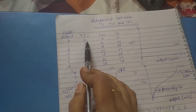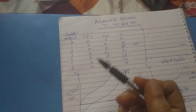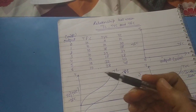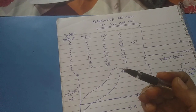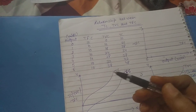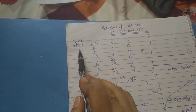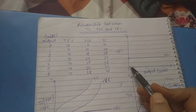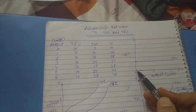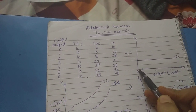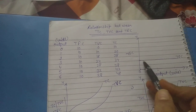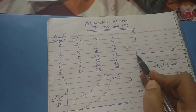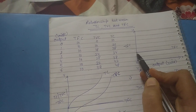Why? The reason — suppose we are hiring a building for production. Before starting the production, we already incurred the expenses. That is why at zero level of output, TFC is 10. This is also one reason the TFC curve will not start from the point of origin — it will start from here, because before starting production, the producer already incurred the expense.